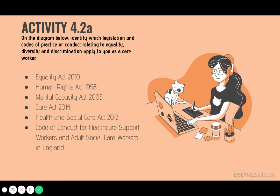The next question asks you to identify legislation and codes of practice that relate to equality and diversity. There is the Equality Act 2010, which makes it unlawful to discriminate against protected characteristics, and the Human Rights Act 1998, which identifies liberties and freedoms every person in the UK can expect, including the right to life and the right to start a family. The Mental Capacity Act 2005 provides a framework ensuring individuals with limited capacity can still exercise choice and control. The Health and Social Care Act 2012 and the Care Act 2014 ensure vulnerable adults are empowered to remain as independent as possible. Finally, the Code of Conduct for healthcare support workers and adult social care workers in England requires workers to uphold and promote equality, diversity and inclusion.